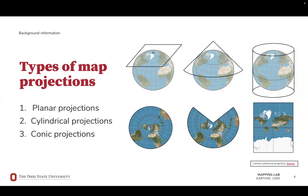The choice of projection depends on the map's purpose, the geographic area it covers, and the properties that need to be preserved most accurately. Each projection distorts Earth's surface in different ways because Earth is a three-dimensional object which we are attempting to represent on a two-dimensional plane. There are three main families of projections based on surface used: planar, cylindrical, and conic. Each has standard lines or points where Earth's surface directly touches the map's surface, minimizing distortion at these locations, but increasing it with distance from them.